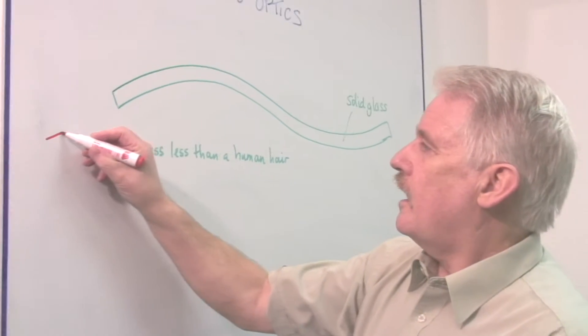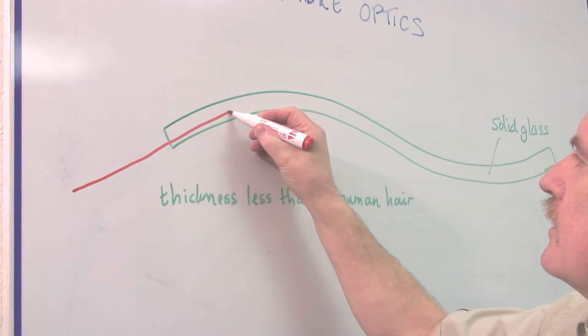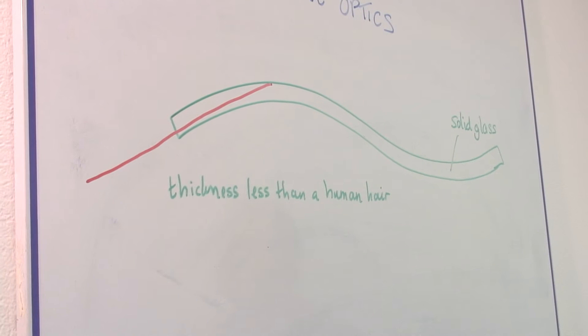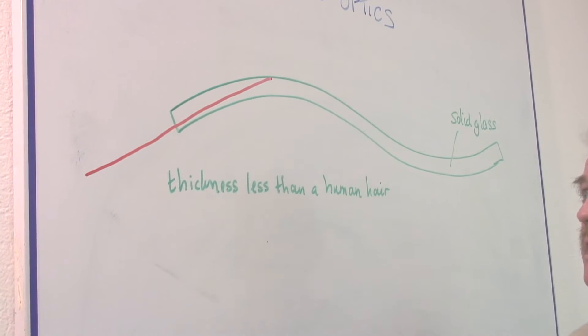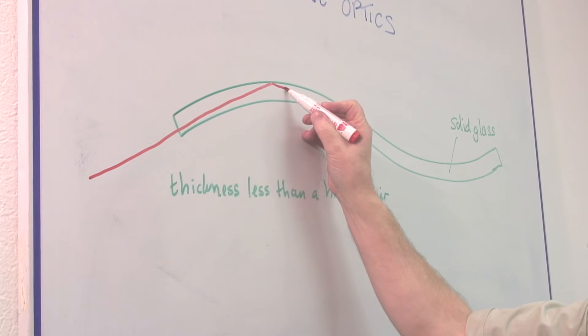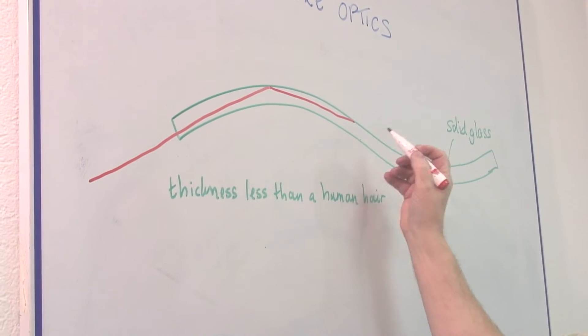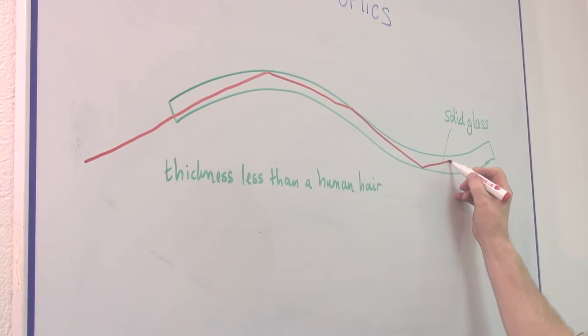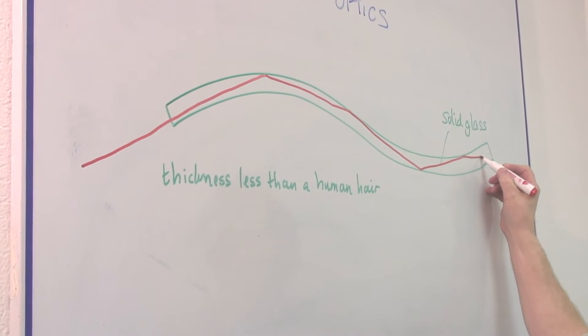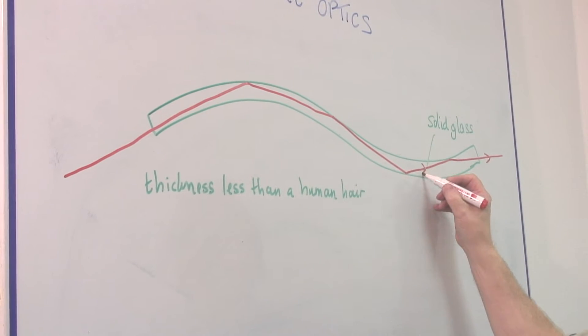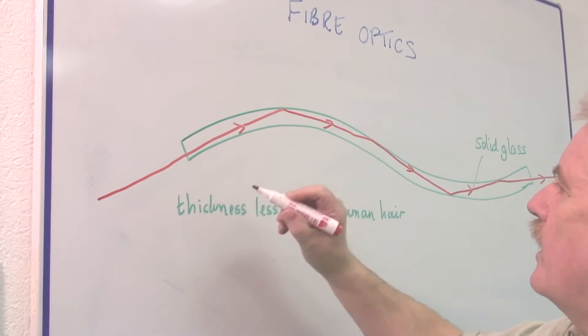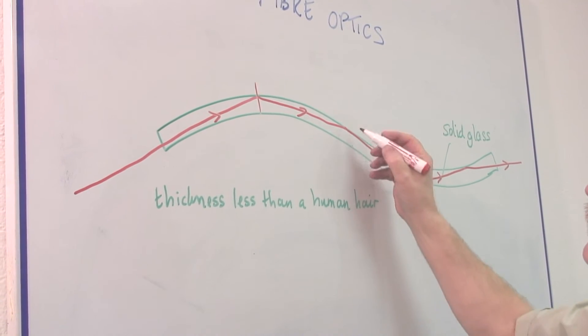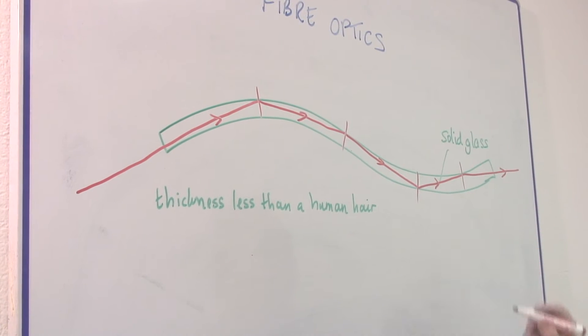That light coming in at the end simply hits the side, the inside of the glass, and it is reflected off the surface and bounces down the fiber in this way, each time bouncing off until it emerges at the other end. So it is a guide for light. You'll get several reflections here along the side of the tube.